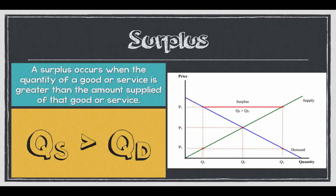Here's an example. At P1, we see demand that is relatively low because of the high price, and supply that is relatively high because of the high price. To find surpluses and shortages, we rely upon the law of supply and the law of demand that we reviewed at the beginning of this lesson.